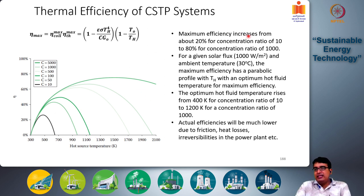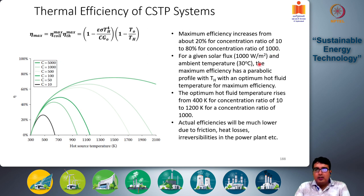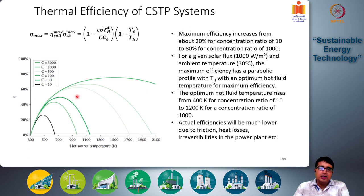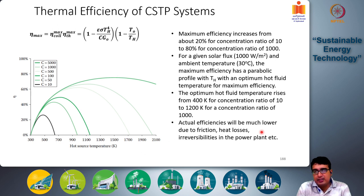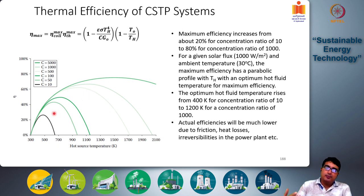The maximum efficiency increases from about 20% for a concentration ratio of 10 to around 70% for a concentration ratio of 1000, for a given solar flux and ambient temperature of 30°C. The maximum efficiency has a parabolic profile with T_h, with an optimum hot fluid temperature for each case. This optimum hot fluid temperature rises from about 400 K for C=10 to 1200 K for C=1000. Actual efficiencies will be much lower due to frictional losses, heat losses, and irreversibility in the power plant, but higher ideal efficiency still yields better actual performance.